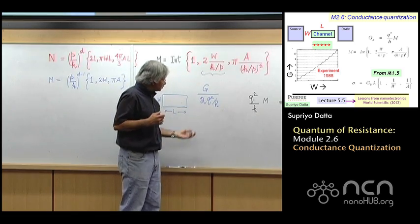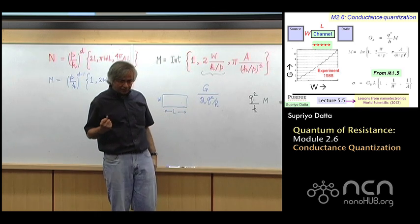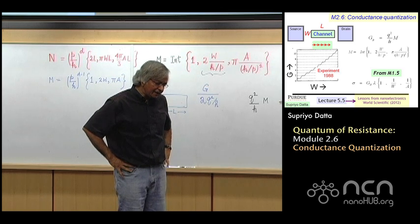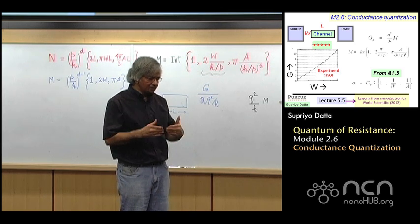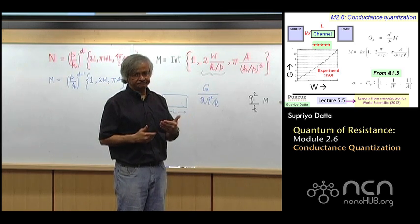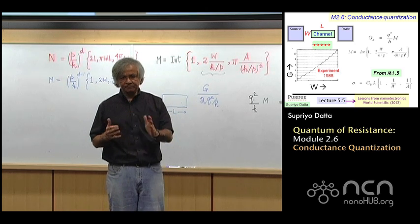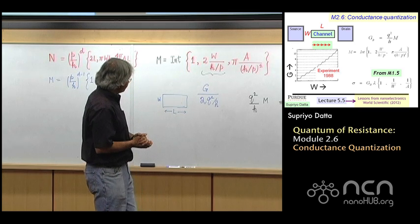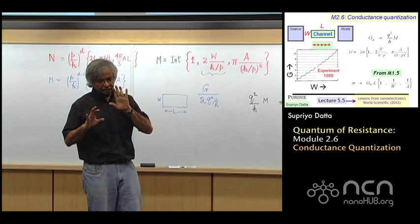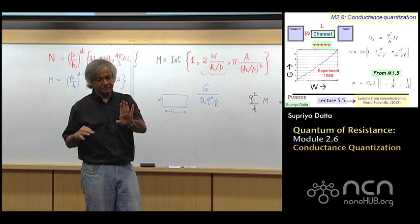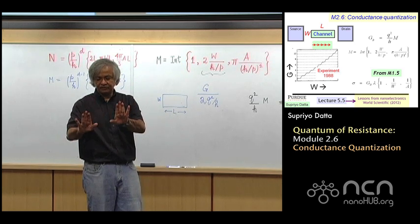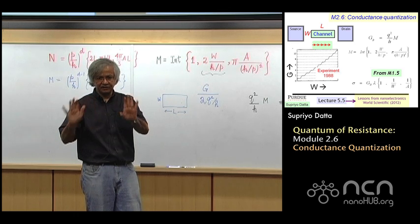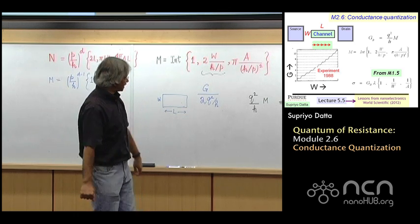And the reason we have the 2Q squared over H is because of what I had mentioned, I believe a couple of modules back, namely that for any conductor, there's always these two spins, you see, there's an upspin and a downspin, which can be viewed as parallel channels. And so it is like conductance, if you don't worry about spins, you calculate something, but then there is an equivalent channel carrying the same amount of current, and so the conductances add, the currents add, conductances add.